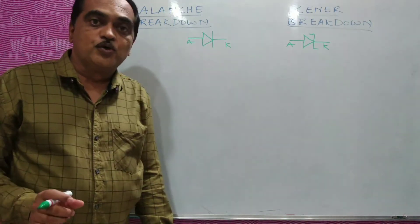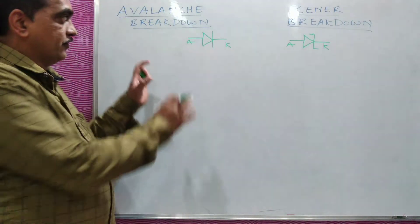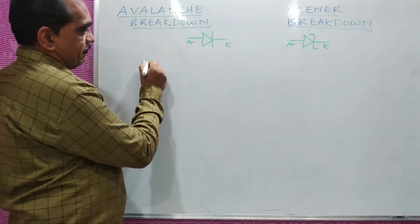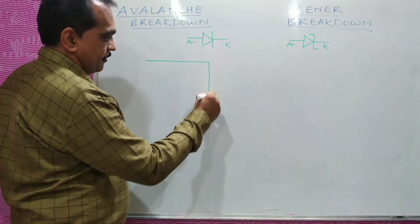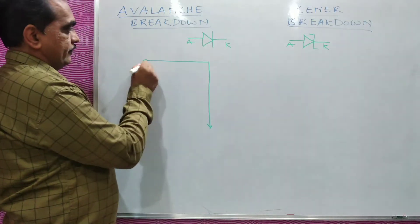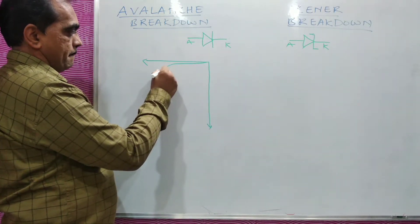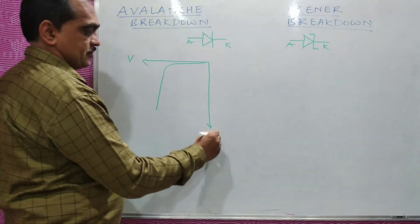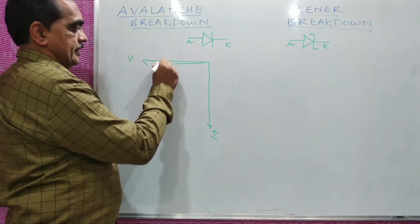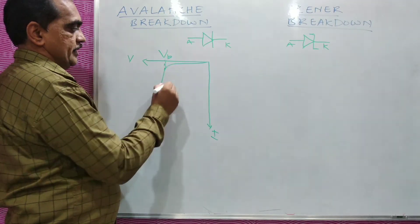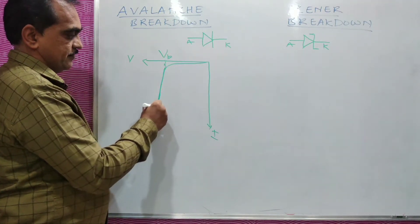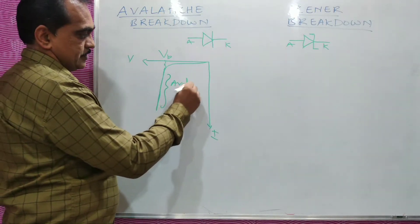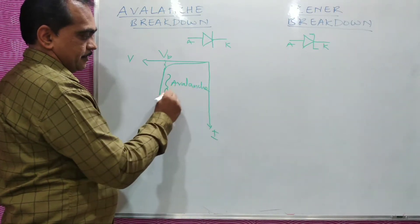Now in avalanche breakdown, if you make the normal diode reverse biased, then the reverse bias graph can be shown like this. This is voltage, this is current, this is your breakdown voltage, and this is where current is increasing. This is avalanche breakdown.